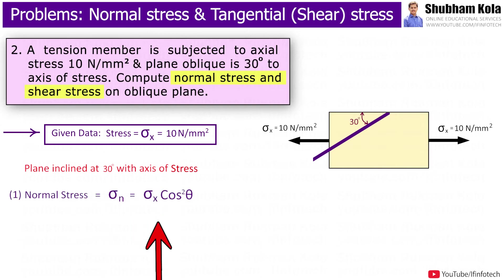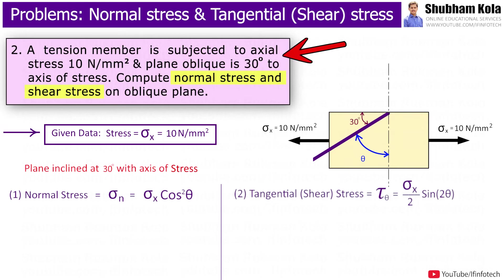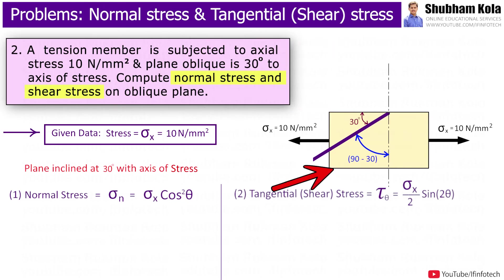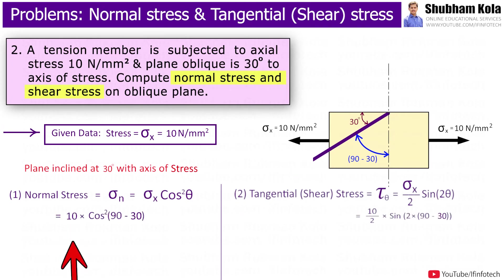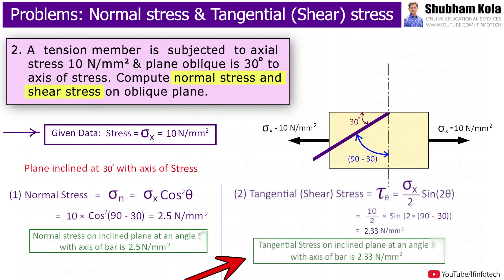The formula for normal stress is σx·cos²θ, and shear stress is (σx/2)·sin2θ, where θ is the angle with the vertical axis. But in the problem, the angle is with the horizontal axis, therefore θ = 90°−30°. Putting the values, the normal stress on the inclined plane is 2.5 N/mm², which is tensile in nature, and the shear stress on the inclined plane is 2.33 N/mm².